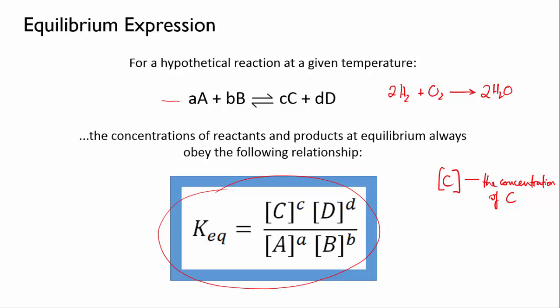You take the concentration of the products at equilibrium, that's C and D, and you put them over the concentrations of the reactants at equilibrium, that's A and B, and you raise each concentration to a power equal to its stoichiometric coefficient. So in the original equation, the stoichiometric coefficient of chemical C was little c. So we raise the concentration of chemical C to the power of little c, and also for D, A, and B.